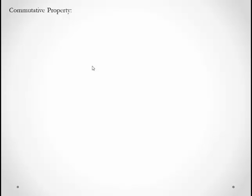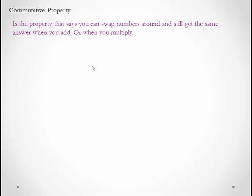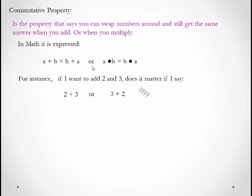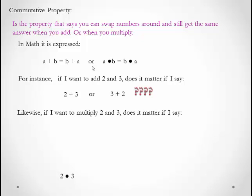The commutative property says that we can swap numbers around and still get the same answer when you add or when you multiply. In math, it's expressed as a + b = b + a, or a × b = b × a. If I want to add 2 and 3, does it matter if I say 2 + 3 or 3 + 2? Or if I want to multiply 2 and 3, does it matter if I say 2 × 3 or 3 × 2?